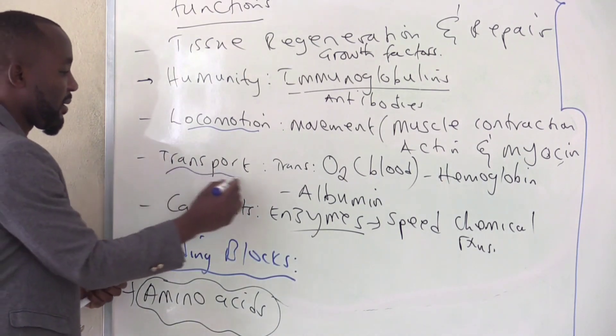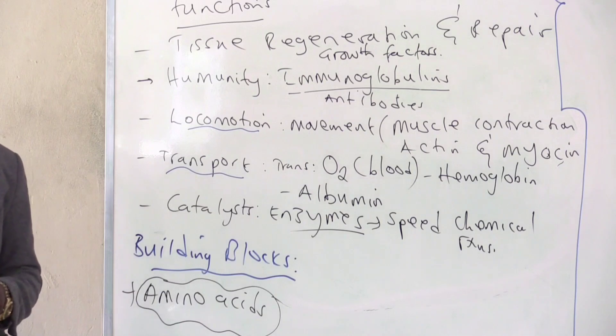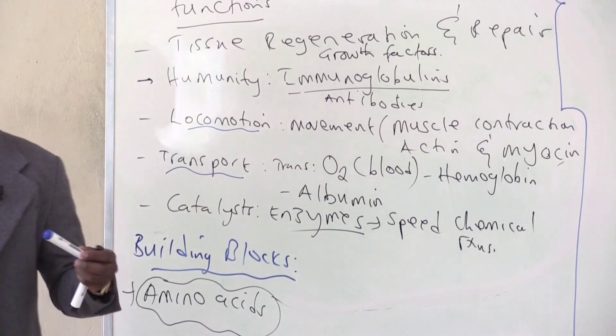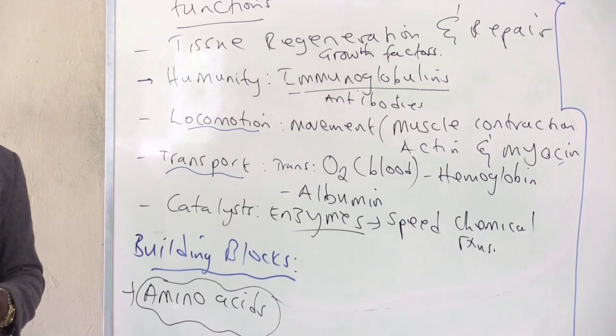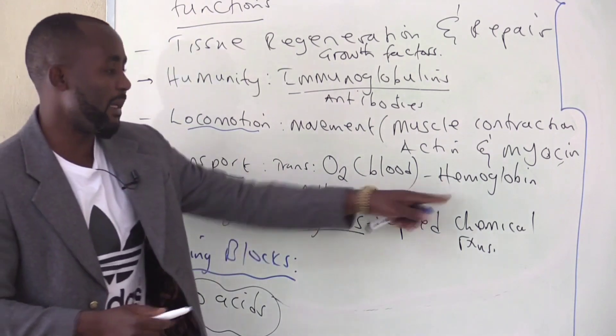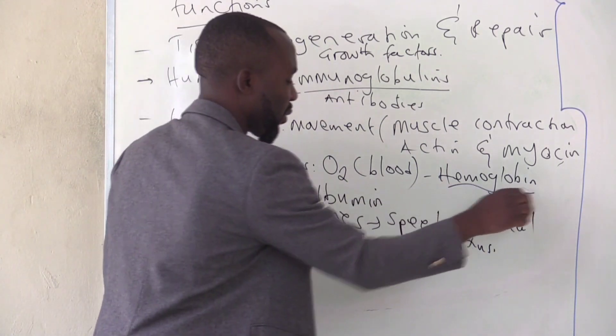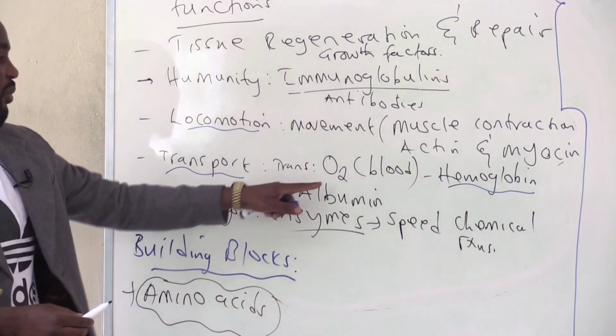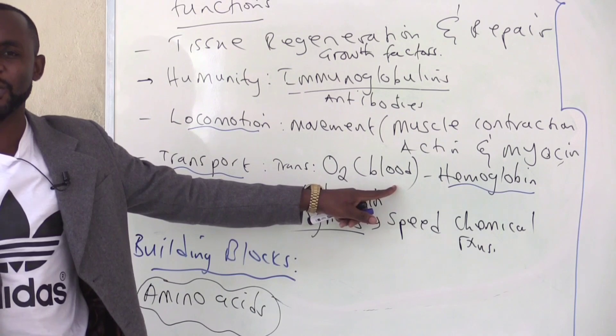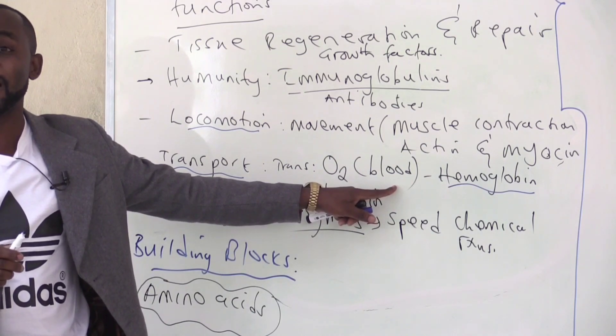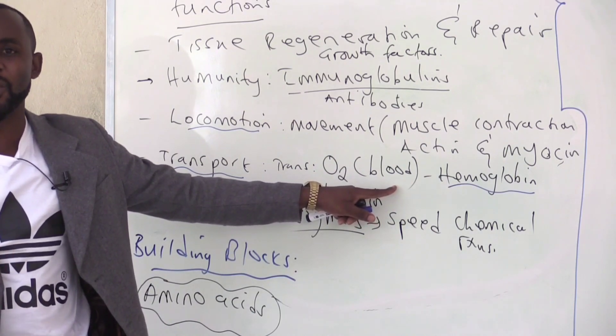Transport. Some proteins help in transporting important substances in the human body. And an example of such a protein is hemoglobin. Hemoglobin is a protein that helps to transport oxygen in the blood. And you know that without oxygen in the blood, tissues are likely to suffer what we call cyanosis.